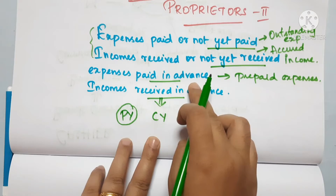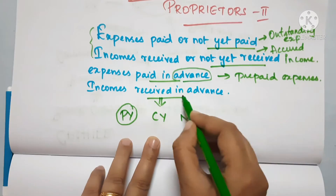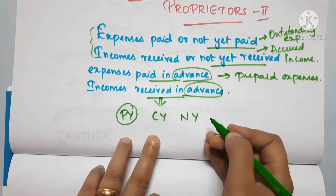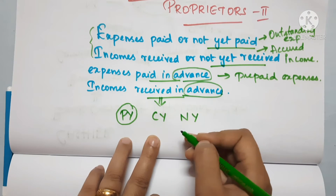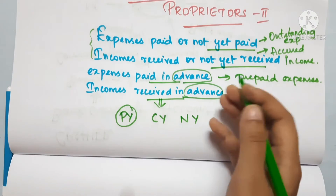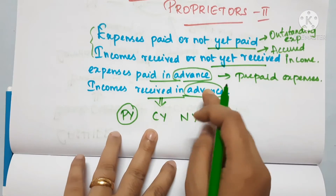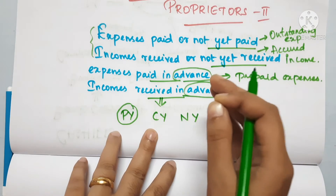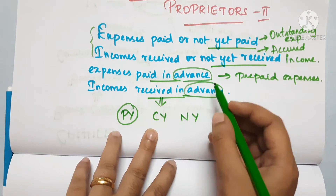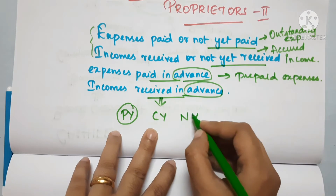Expenses paid in advance or income received in advance — when we look at 'advance,' it means the next year's income or expenses are being carried forward in advance. So 'in advance' relates to the next year. That is the meaning of the advance concept.